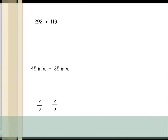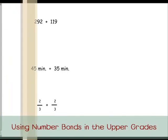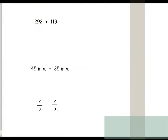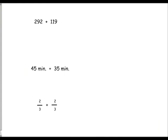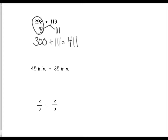Number bonds can also be used in the upper grades. Rather than setting up a problem vertically using the standard algorithm, you can use a number bond to solve it horizontally. For example, if you know you only need 8 more to make 300, you break 119 into 8 and 111, giving you 300 plus 111 equals 411.